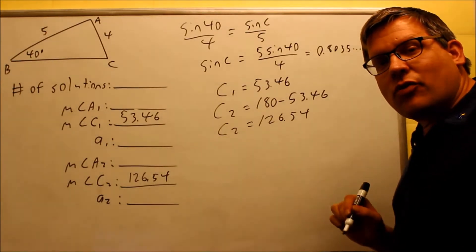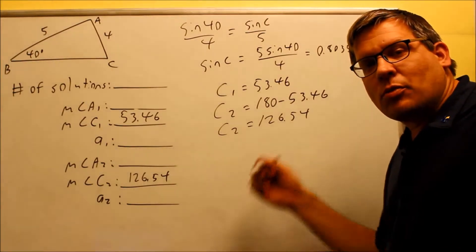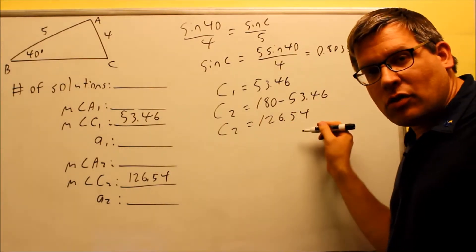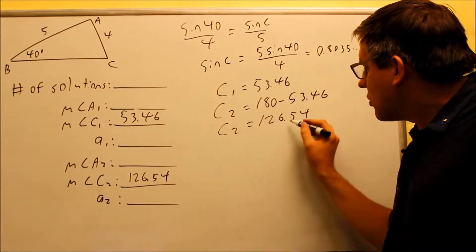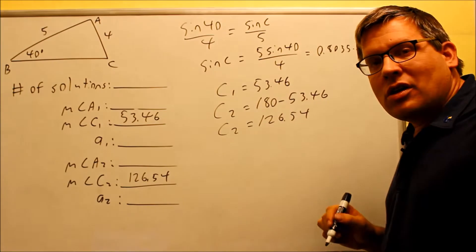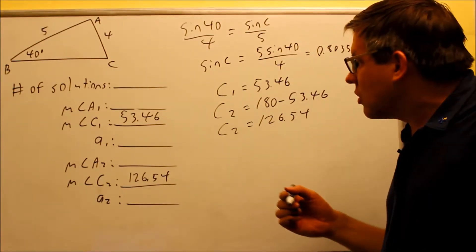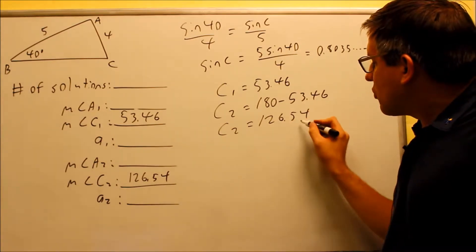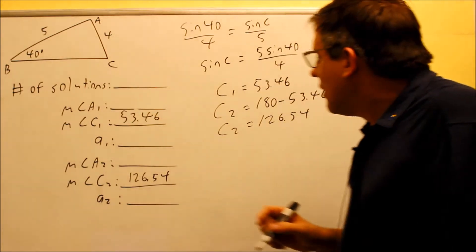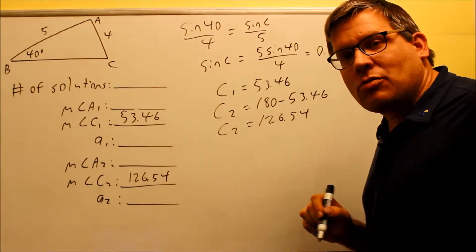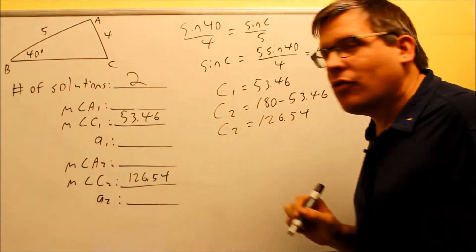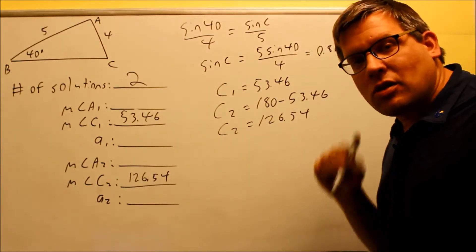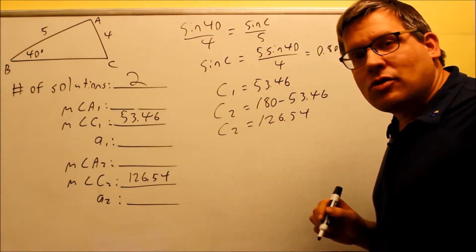Now we have to check to see if we have one or two solutions. As I mentioned in the previous video, the process is you take your secondary solution, the one the calculator did not originally give you in the second quadrant, add it to the angle already in the triangle. If you get something more than 180, you only have one solution. However, this time 126.54 added to 40 gives you something less than 180, so that tells us we really do have two solutions.